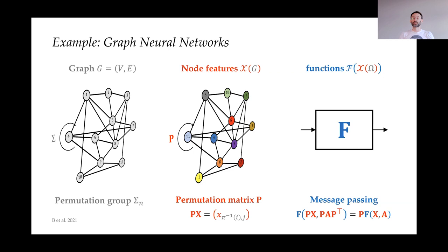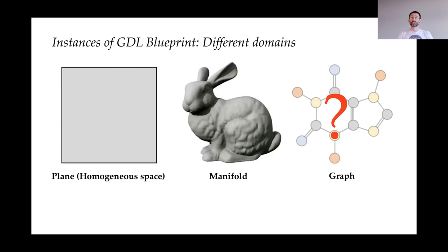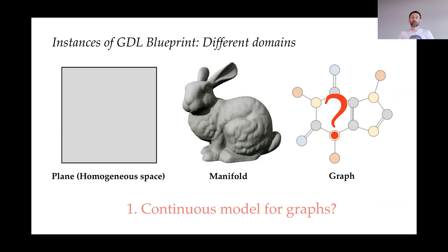This blueprint can be applied to different data types and domains — grids, meshes, and graphs. Grids and meshes can be considered as discretizations of continuous structures: a grid as a discretization of a plane or homogeneous space, and meshes as discretizations of manifolds or surfaces. However, we don't have a continuous model for graphs — there's no immediate analogy. This lack of symmetry is something I personally find disturbing and would like to address.